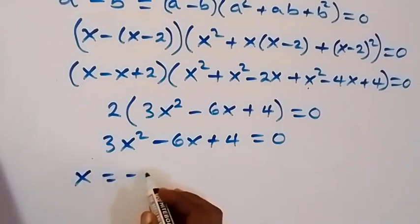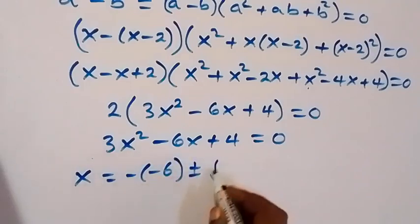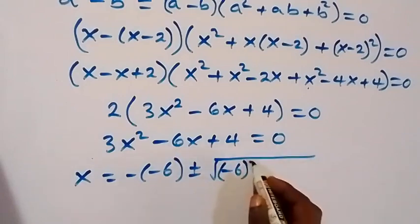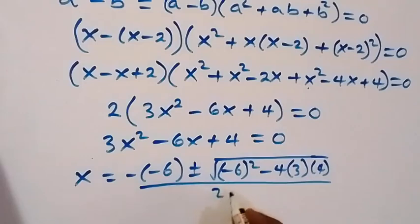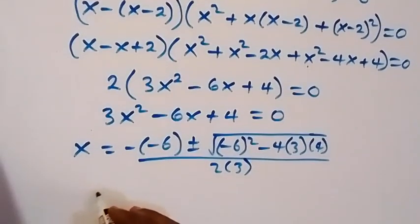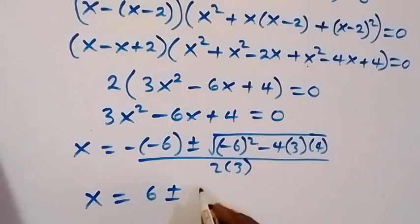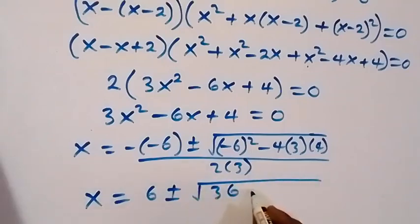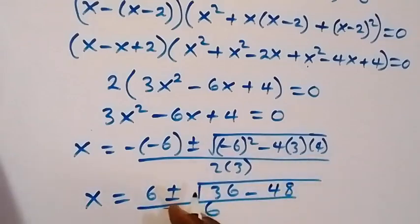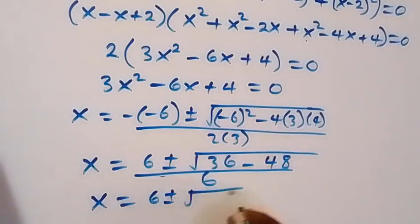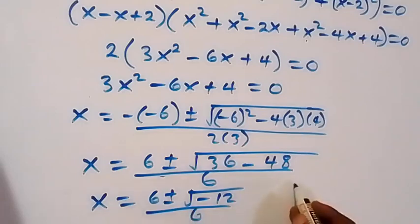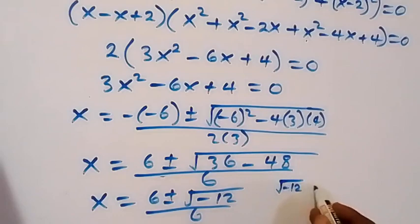Applying the quadratic formula with a equals 3, b equals minus 6, c equals 4: x equals minus(−6) plus or minus square root of (36 minus 4 times 3 times 4), over 2 times 3. This gives x equals 6 plus or minus square root of (36 minus 48), over 6, which is 6 plus or minus square root of minus 12, over 6.